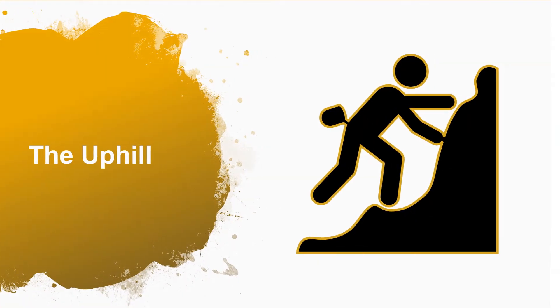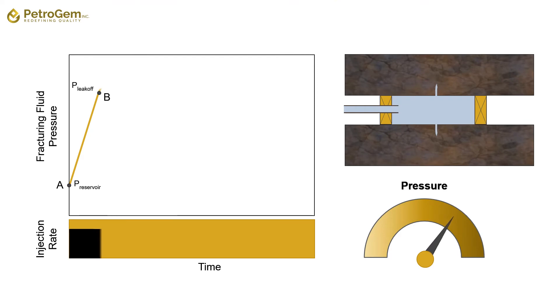The uphill. Initiating fractures means there will be more room for the injected fluid to occupy. Having this extra room, fluid will not get as much pressurized as before and the slope of the straight line is reduced, starting from the leak off point until it gets to the climax of the curve.